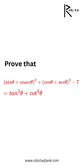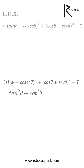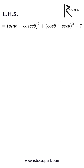Let's simplify and prove this trigonometric identity step by step. We start with the left hand side of the equation: (sinθ + cosecθ)² + (cosθ + secθ)² minus 7.